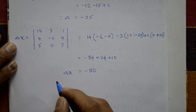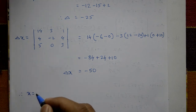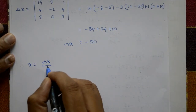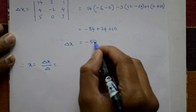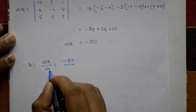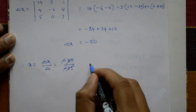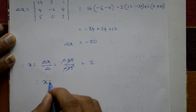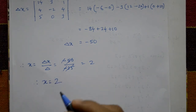Therefore, x is equal to delta x divided by delta. Delta x is minus 50 and delta is minus 25. These cancel, giving x equal to 2. This is the required x value.